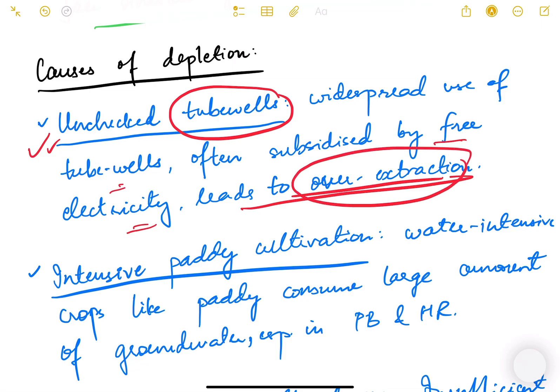Over-extraction happens because people just need to dig a tube well in their farm, then they get free or subsidized electricity, they can run the motor pump, and they can draw water as much as they want. This is the number one reason of water depletion.